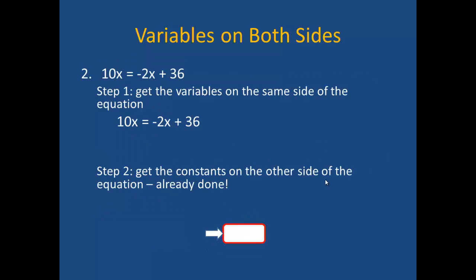In our second example, we have the equation 10x equals negative 2x plus 36. My first step will be to get the variables on the same side of the equation. I am going to add 2x to both sides, because the 2x is negative and I would like the 2x terms to cancel out. So I add 2x and simplify to get 12x equals 36.